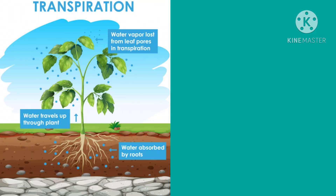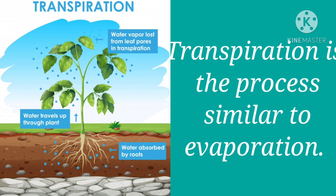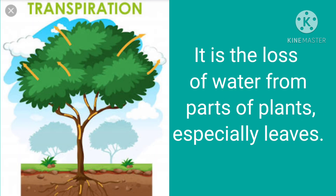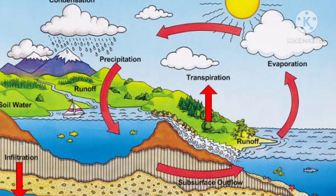Dear children, transpiration is a process similar to evaporation. In transpiration, water comes from the parts of plants, especially from the leaves. This transpiration adds to the amount of water vapour present in the air, and thus it also plays a role in cloud formation.